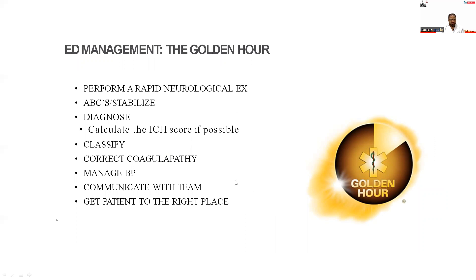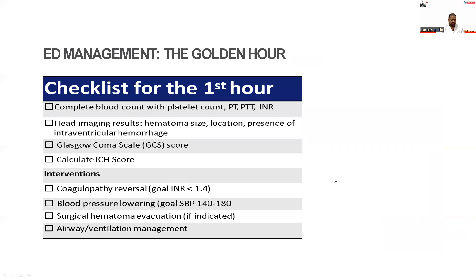How do we manage these patients in the emergency department? We consider this the golden hour: perform a rapid neurological examination, follow the ABCs and stabilize, diagnose and calculate the ICH score if possible, classify the type of hemorrhage, correct the coagulopathy, manage the blood pressure, communicate with the team, and get the patient to the right place. The checklist includes complete blood count, PT, INR, blood glucose, head imaging for hematoma size and location, presence of intraventricular hemorrhage, GCS score, ICH score calculation, and interventions including coagulopathy reversal, blood pressure lowering, surgical hematoma evacuation, and airway management.